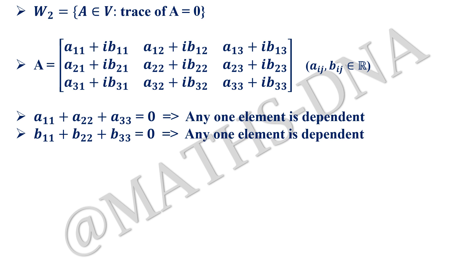If you take 1 + 2 + 3 + 4 it is 10, but if I take the fifth value as minus 10 it will be 0. The sum will be 0. So only one entry will be dependent in real part and one entry will be dependent in the complex part or imaginary part. So the dimension of W₂: total A was 18 and two entries are getting to be dependent so it will be 16.